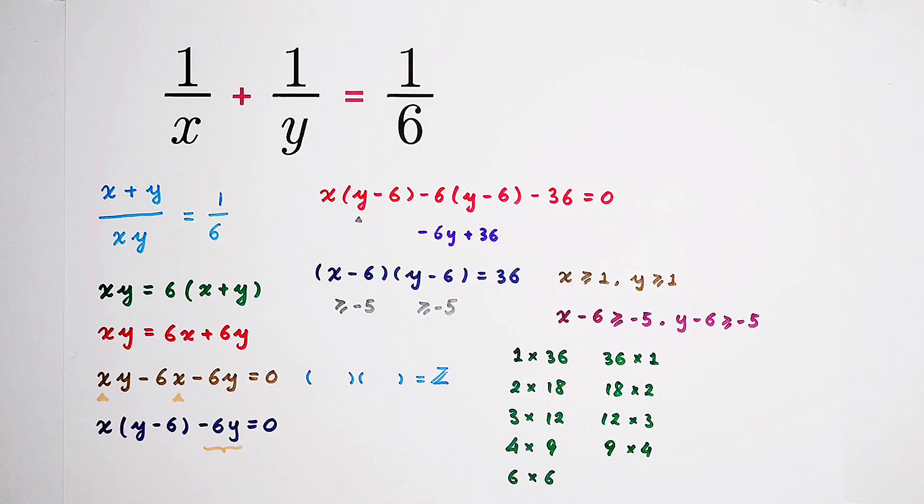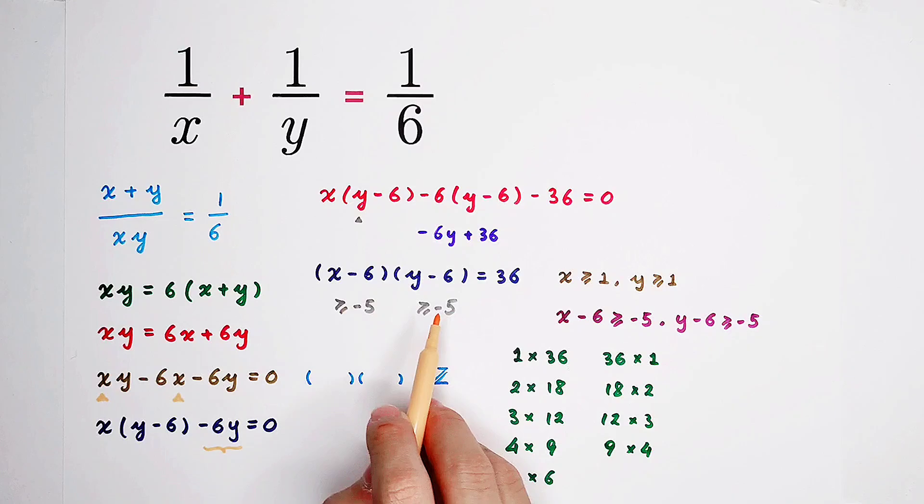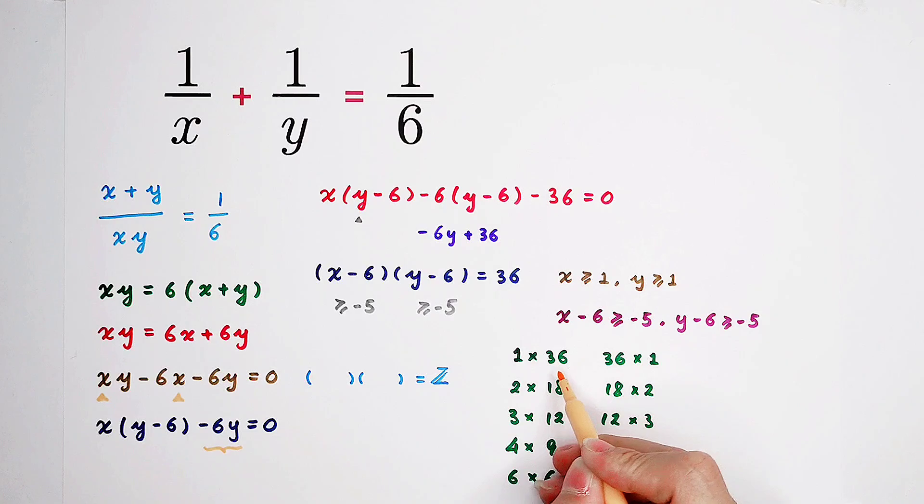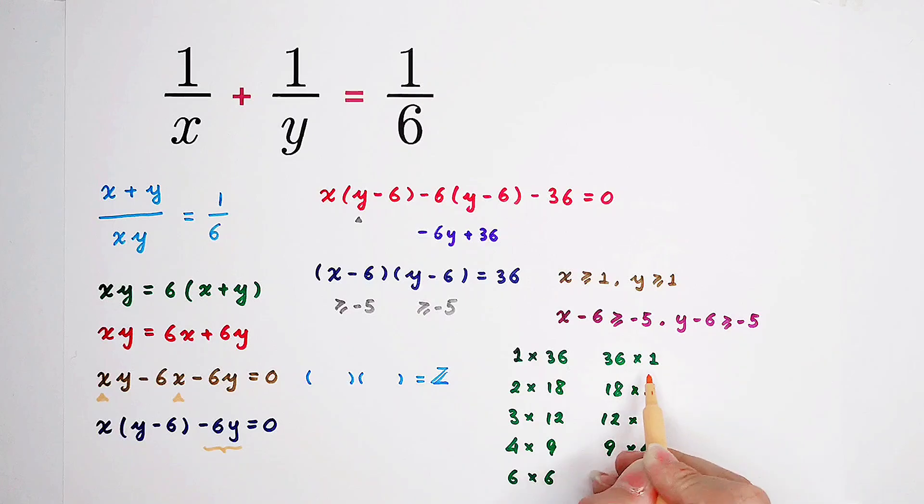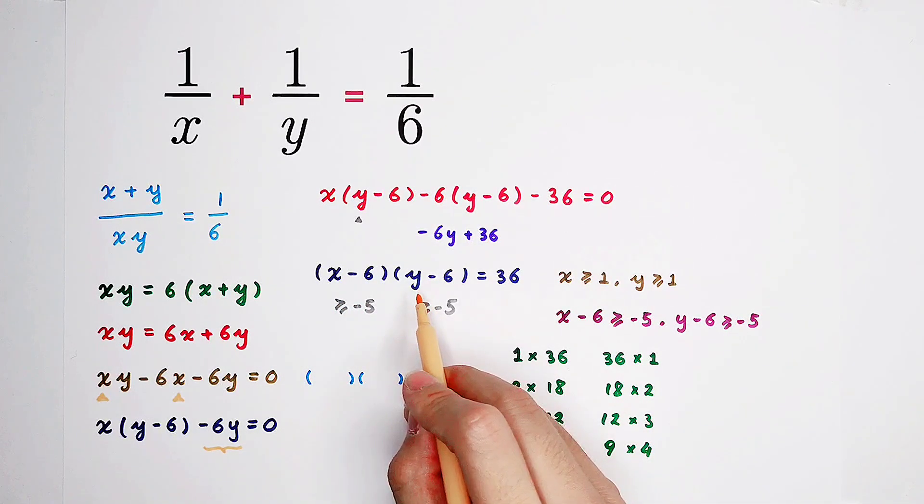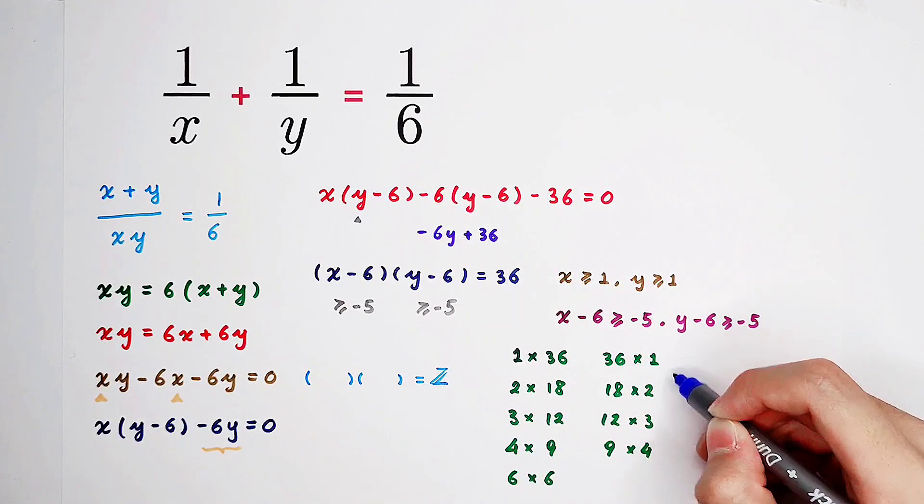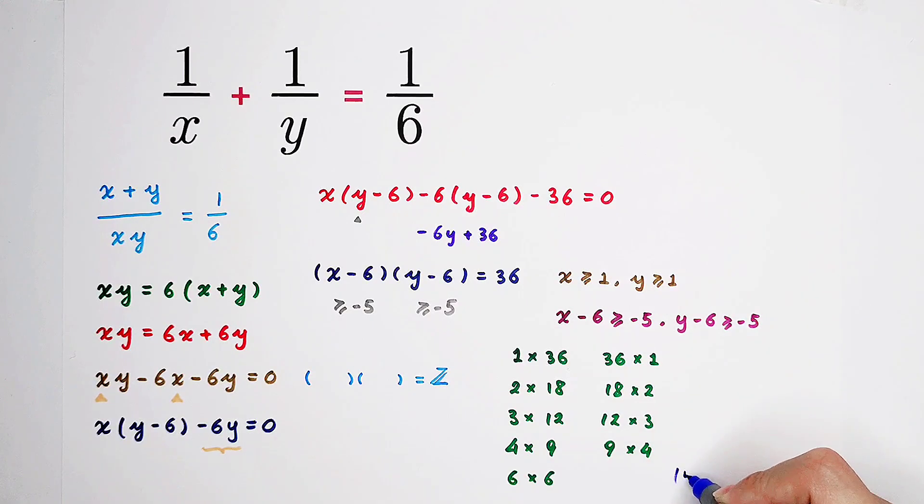Why? Because you can see, x minus 6 and y minus 6, these two terms are symmetric. So as soon as we get the solutions from this case, we'll get the solutions of the second case immediately. Why? Because 1 and 36 have only changed their orders, and x, y as well. So we have only 1, 2, 3, 4, 5, only 5 cases. We have only 5 cases to work with.